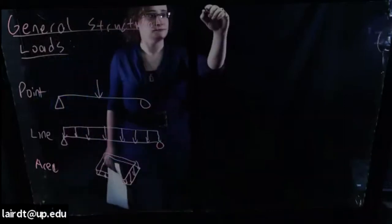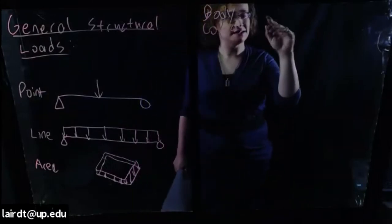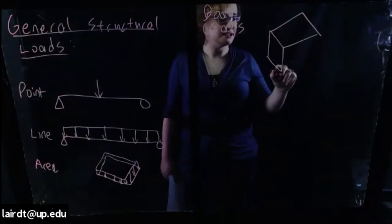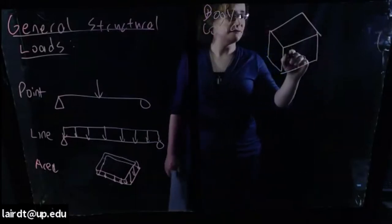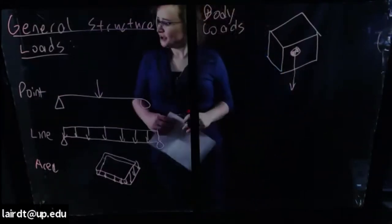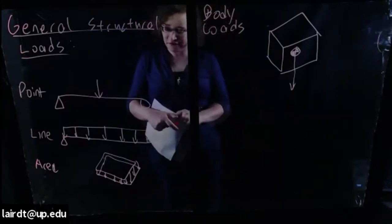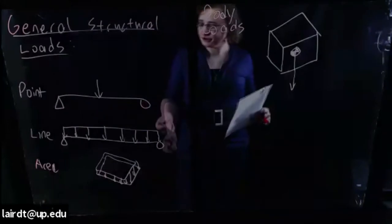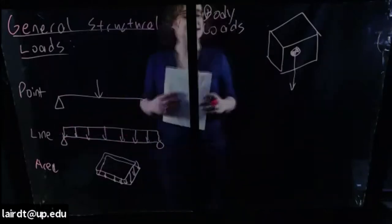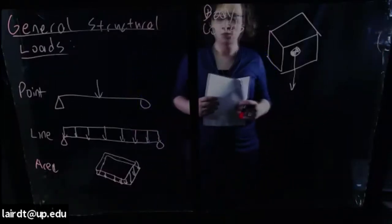And you could also have body loads — we could represent this as maybe a cube with a center of mass and an arrow downward from that. We generally don't deal too much with body loads in civil engineering. Examples of body loads would be things like the self-weight of a fluid, or inertia loads from fluids, maybe from a tuned mass damper.